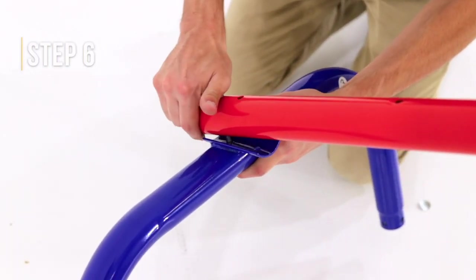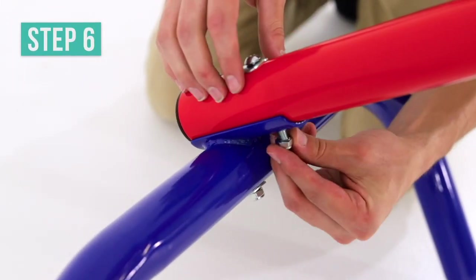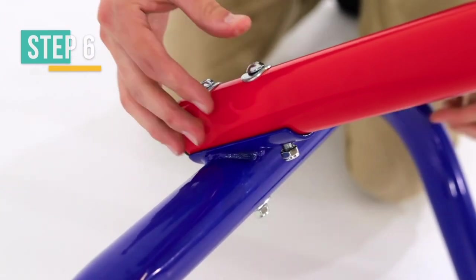On the other end of the top tube, attach the U-frame two with button bolts, arc washers, and lock nuts.